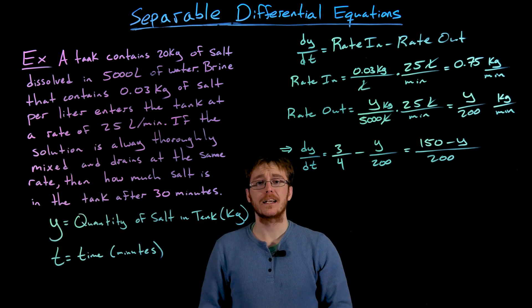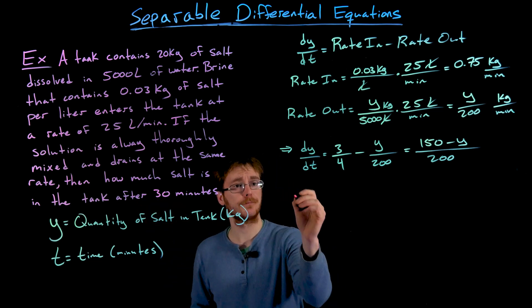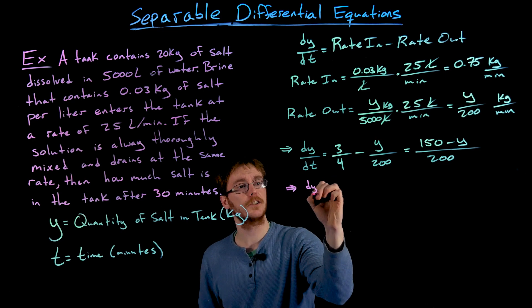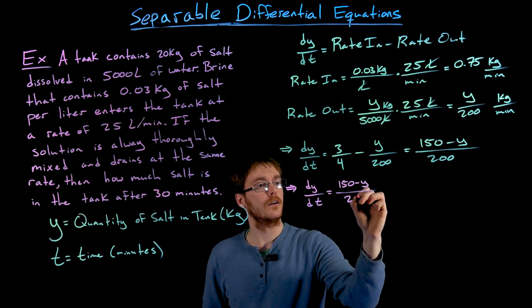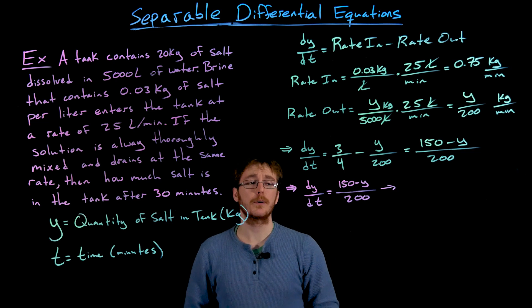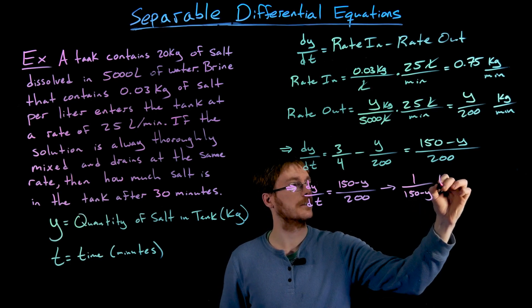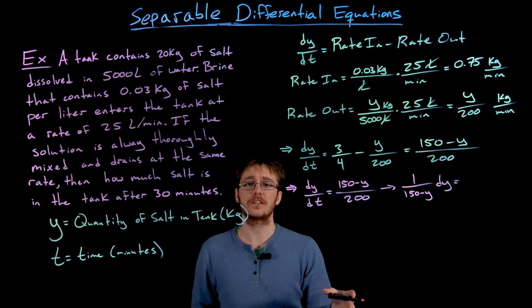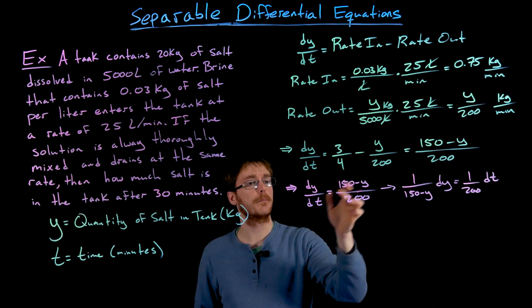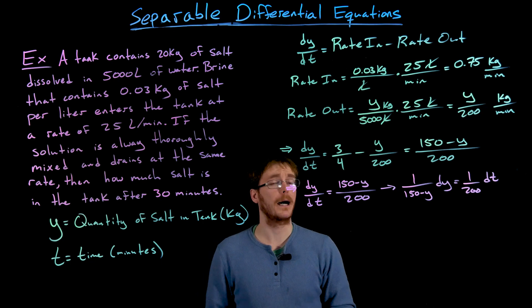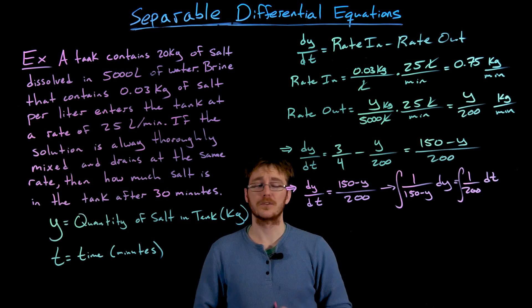All of our work so far has been setting up the differential equation. Now we solve it. We know dy/dt = (150 minus y)/200. We can separate this equation by moving all y quantities to the left-hand side: (1/(150 minus y)) dy = (1/200) dt. We divided both sides by (150 minus y) and multiplied by dt. Now we integrate both sides.